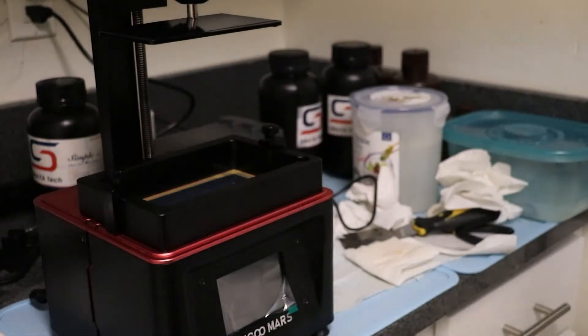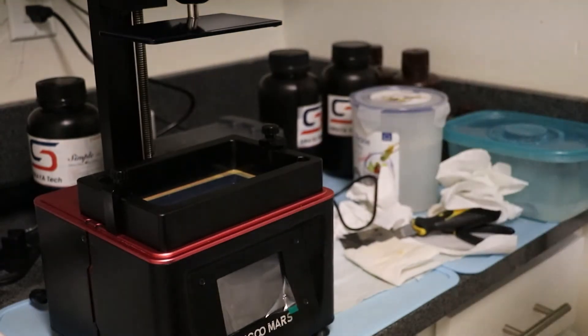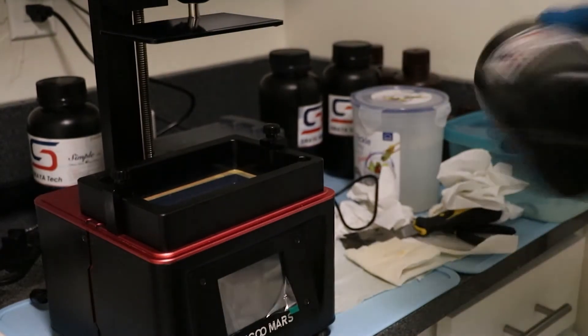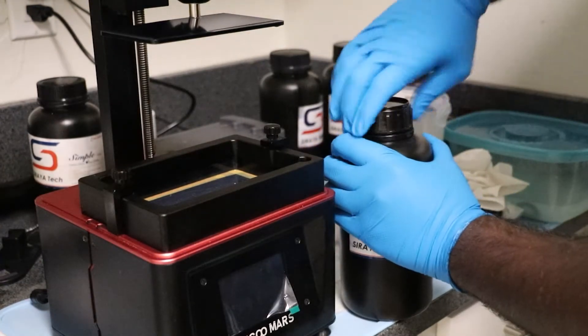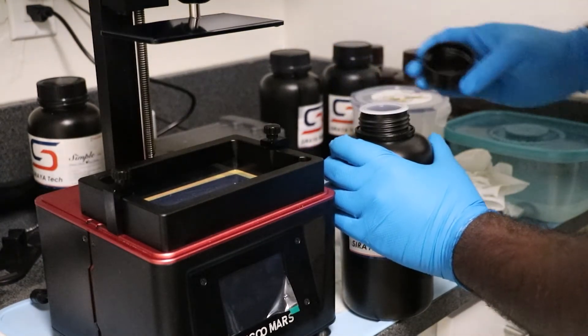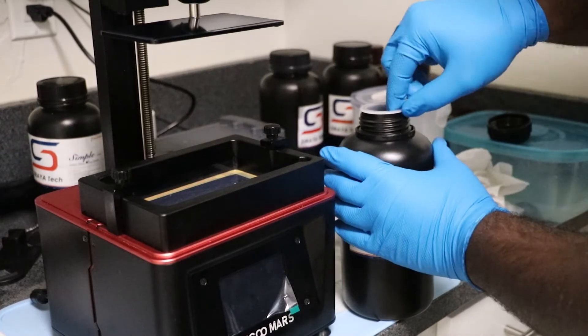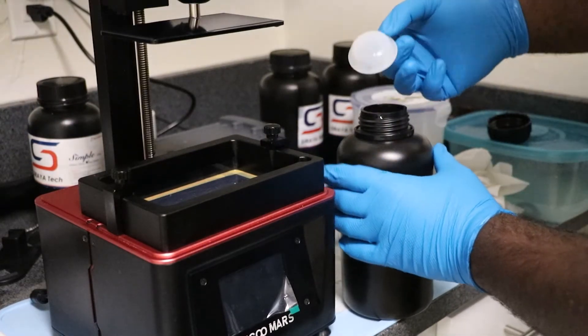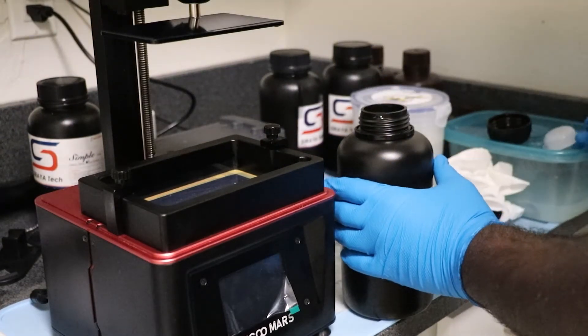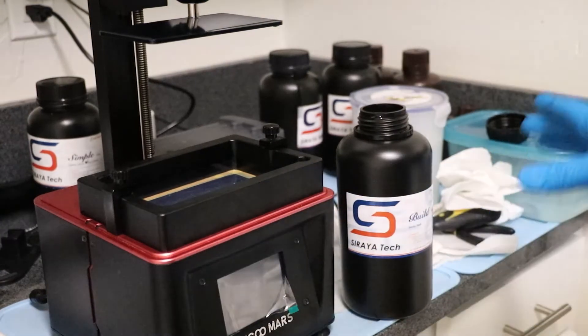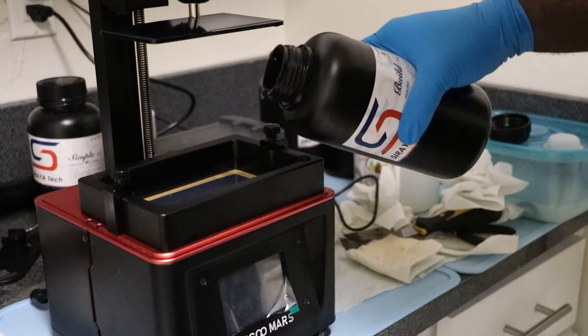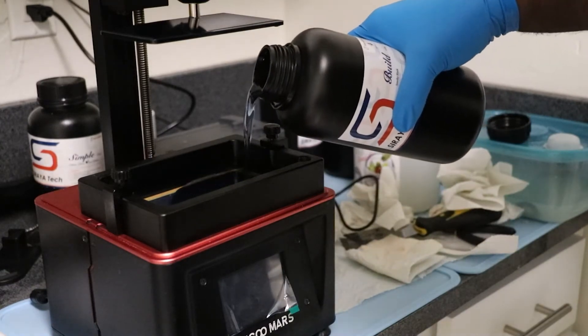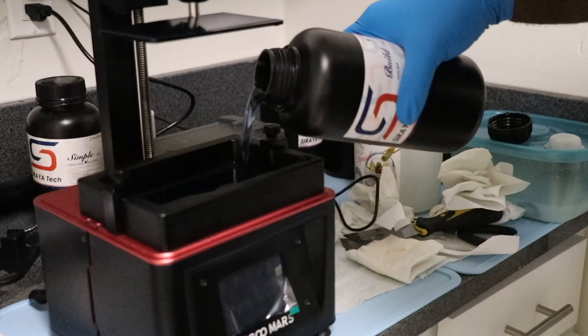Now with any resin you want to make sure you give it a good shake to stir up all the particles, make sure it's evenly distributed before you pour it into your vat. This bottle features a new cap for Siraya Tech including an inner seal, which is new. I think they had some issues with leaking in the past, but any improvement is good to see.